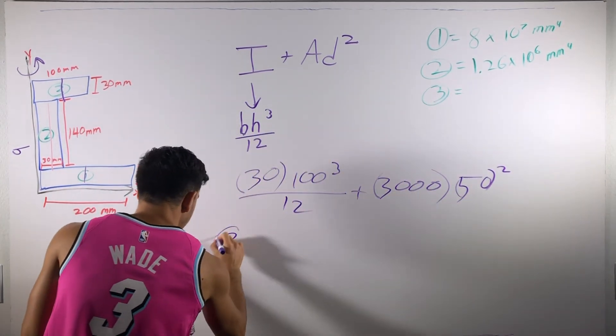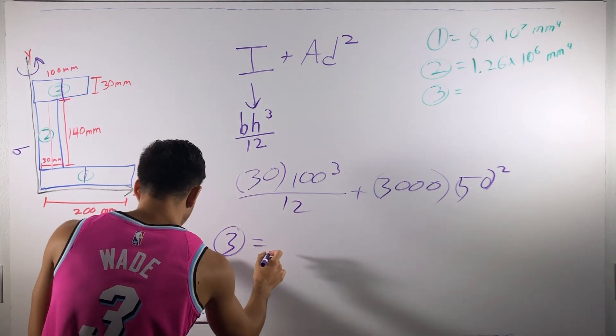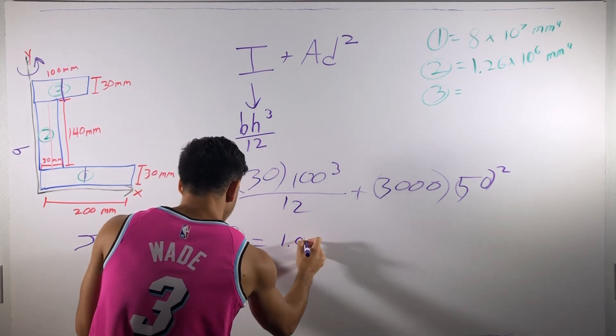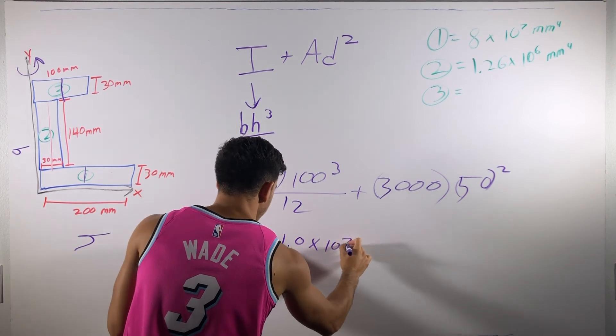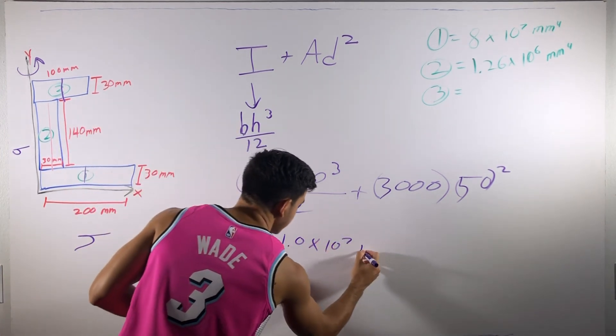And our three, or this entire thing, if you compile the number, it's going to come out to be 1.0 times 10 to the seventh millimeters to the fourth.